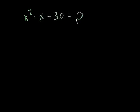And this one I'm just going to cut to the chase. Let's just solve x² - x - 30 = 0.